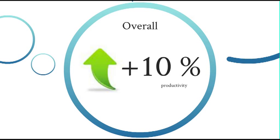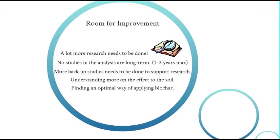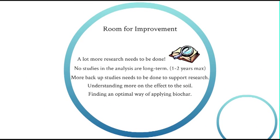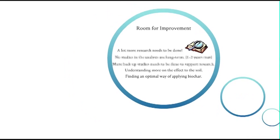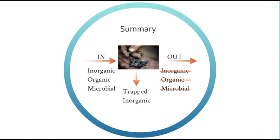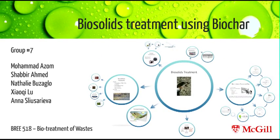Overall, biochar has a net positive effect on the soil and increases productivity by 10%. There is, however, room for improvement. We need more long-term studies, more understanding of how biochar affects the soil, and an optimal method for biochar application. To summarize, biochar is responsible for the biodegradation of organic compounds and microorganisms. It also removes inorganic substances from the soil due to the chub effect. This remediates the soil and leaves us with clean water. Thank you for watching!